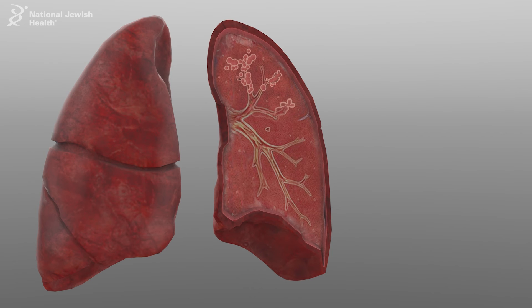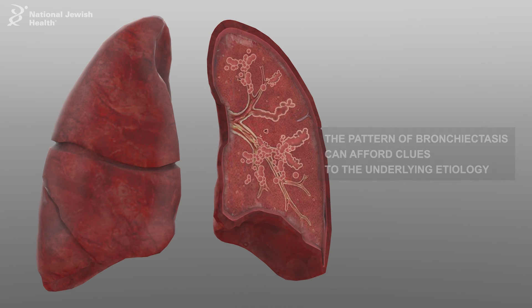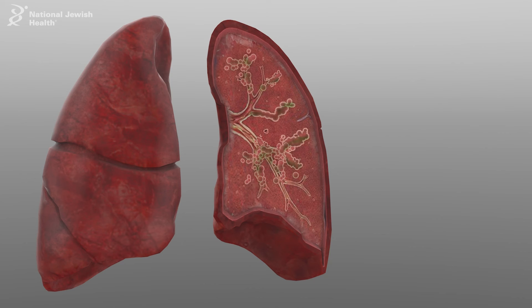Bronchiectasis may be localized to one area of the lung or found diffusely, and the pattern of that bronchiectasis can afford clues to the underlying etiology. As the airway incurs damage and loses its ability to clear secretions, opportunistic microbes colonize the airways. This colonization occurs because of impaired mucociliary clearance and the failure of neutrophils to phagocytize and kill.